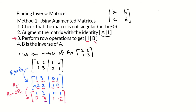Now let's try to get a 1 in the second row, second column position. The way we can do that is by multiplying row 2 by negative one-fourth. We keep row 1 exactly the same: 1, 3, 0, 1. Multiplying row 2 by negative one-fourth gives us: negative one-fourth times 0 is 0, negative one-fourth times negative 4 is 1, negative one-fourth times 1 is negative one-fourth, and negative one-fourth times negative 2 is positive one-half.